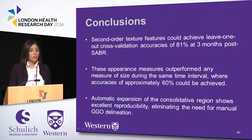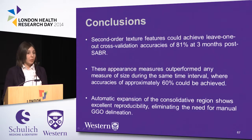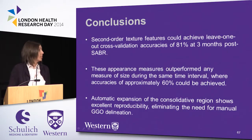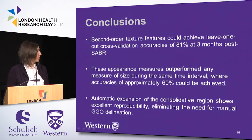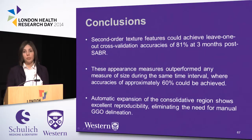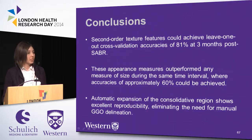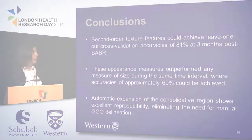In conclusion, we've shown that second-order texture features can achieve leave-one-out cross-validation accuracies of over 81%, compared to any size measure at the same time point which could only achieve accuracies of 60%. We've also shown that automatic expansion of the consolidation shows excellent reproducibility, potentially eliminating the need for manual GGO delineation. We're currently working on validating all results on a larger dataset, and we hope to make a clinical translation to a useful tool which could potentially allow for earlier salvage of patients with recurrence and result in fewer investigations of patients exhibiting only benign injury.